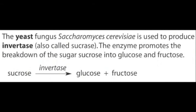Glucose isomerase is another enzyme used in the sweet-making industry. This enzyme converts glucose into fructose, which is sweeter. Fructose syrups, which are used to make sweets, are very sweet indeed.